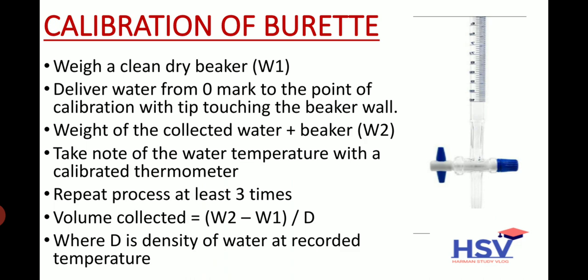Calibration of burette: A burette is a graduated glass tube with a tap at one end for delivering a known volume of liquid, especially in titration. See in the picture — the burette has a tap at one end so that it can deliver a known volume of liquid in titration.